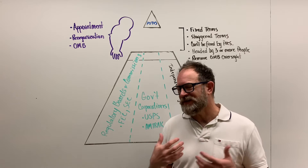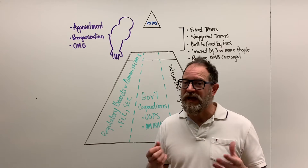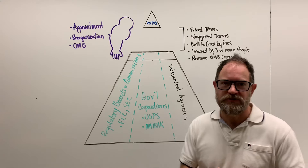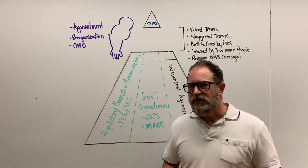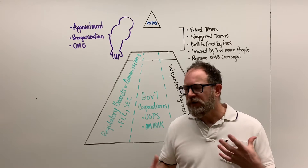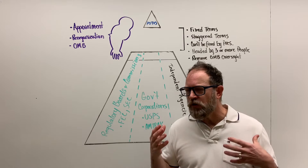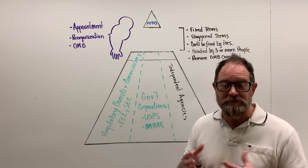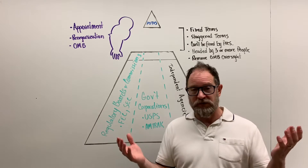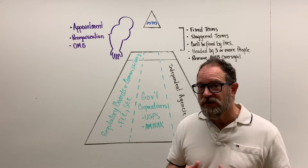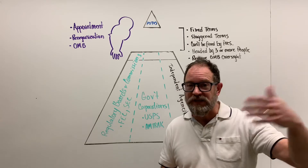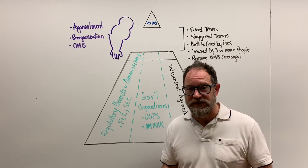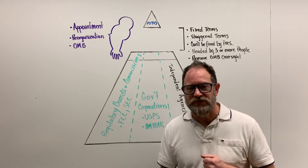Another entity on this side of the pyramid, designed to be free from both presidential and congressional control, is government corporations. A good example is the United States Postal Service or Amtrak, the railway service. It's a publicly run corporation, designed because no private entity could ever really make money by requiring that mail be delivered to every household in the United States. Does UPS go to very rural Minnesota and ensure mail gets there whether there's snow, sleet, rain, sun, or shine?